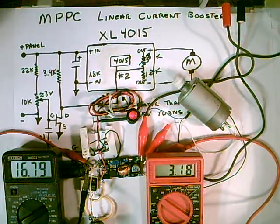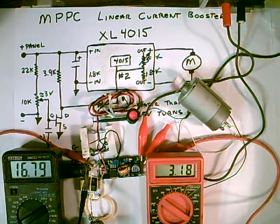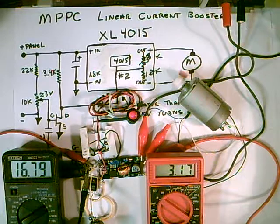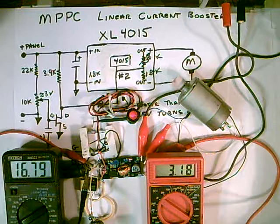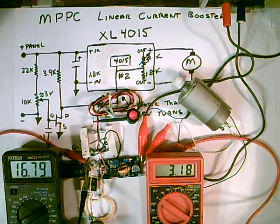The wattage is volts times amps. The panel is pretty much constant current. It's a current source. And the watts is volts times amps. So if you drop the volts, you're going to lose a lot of power.